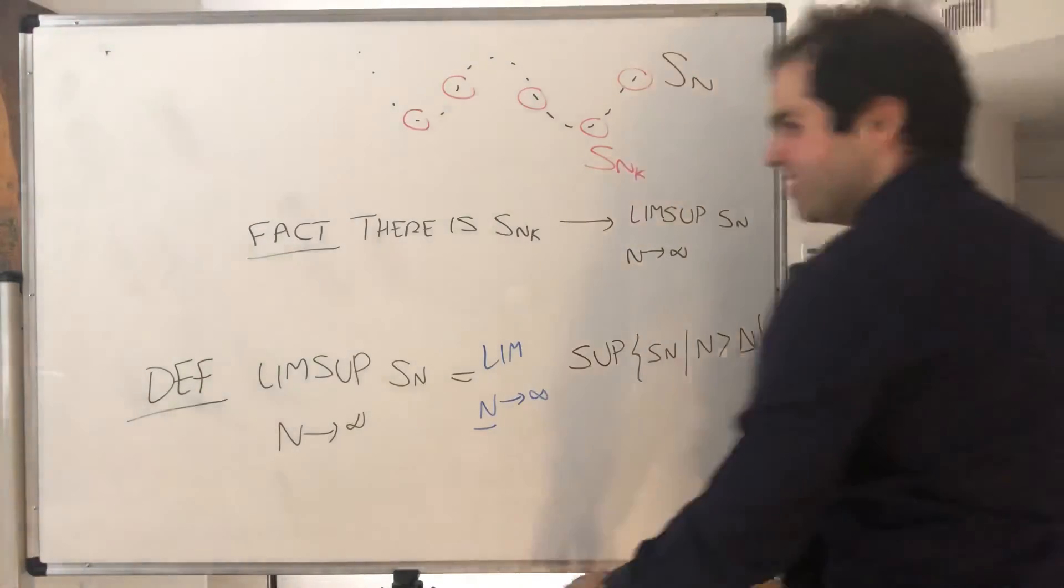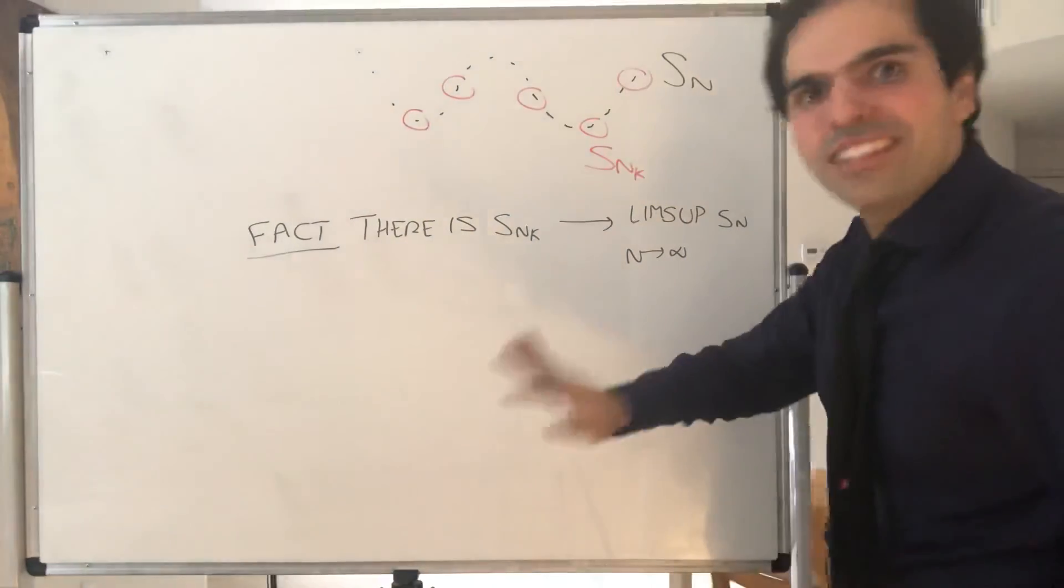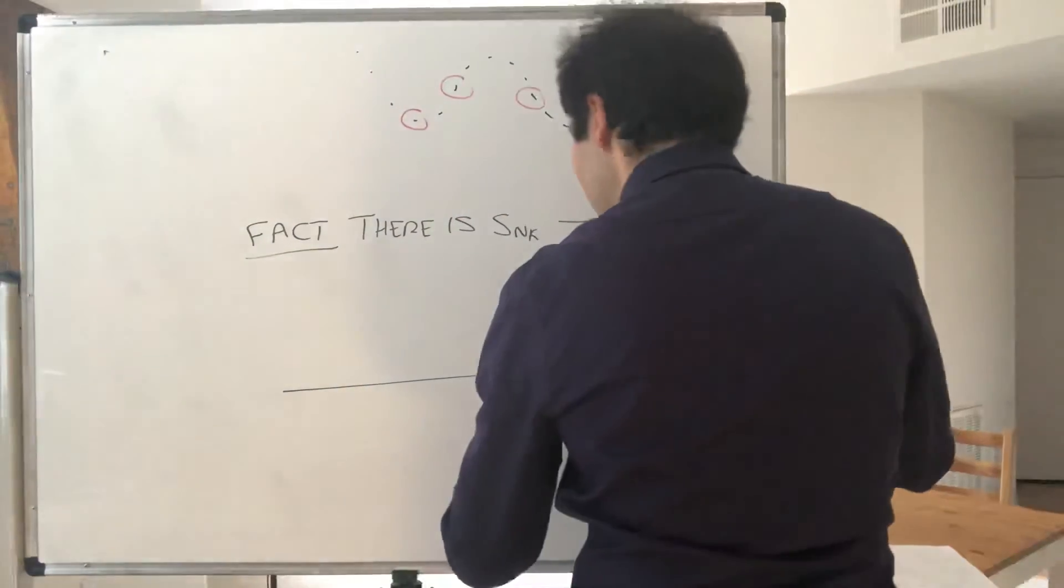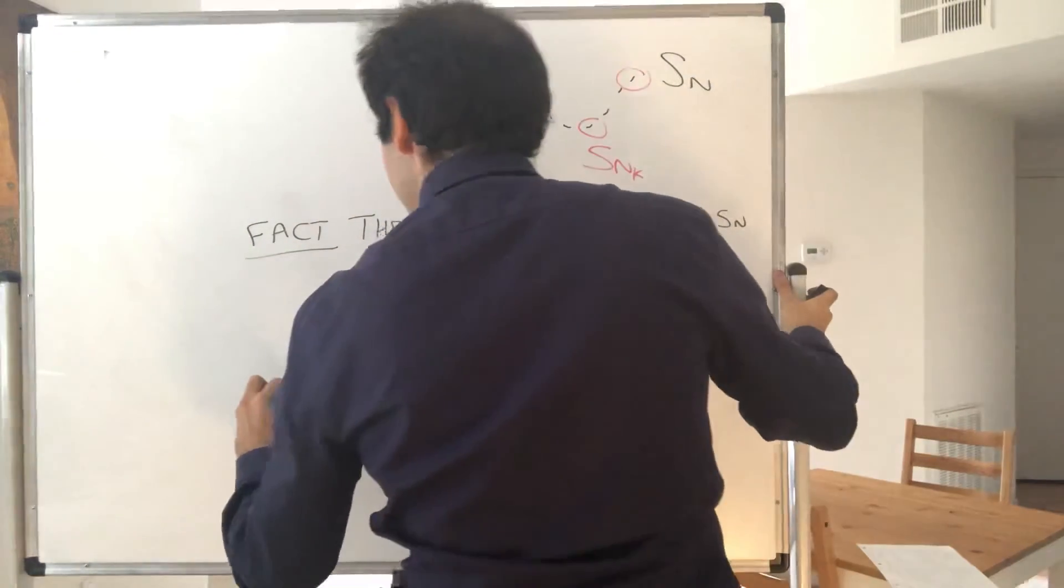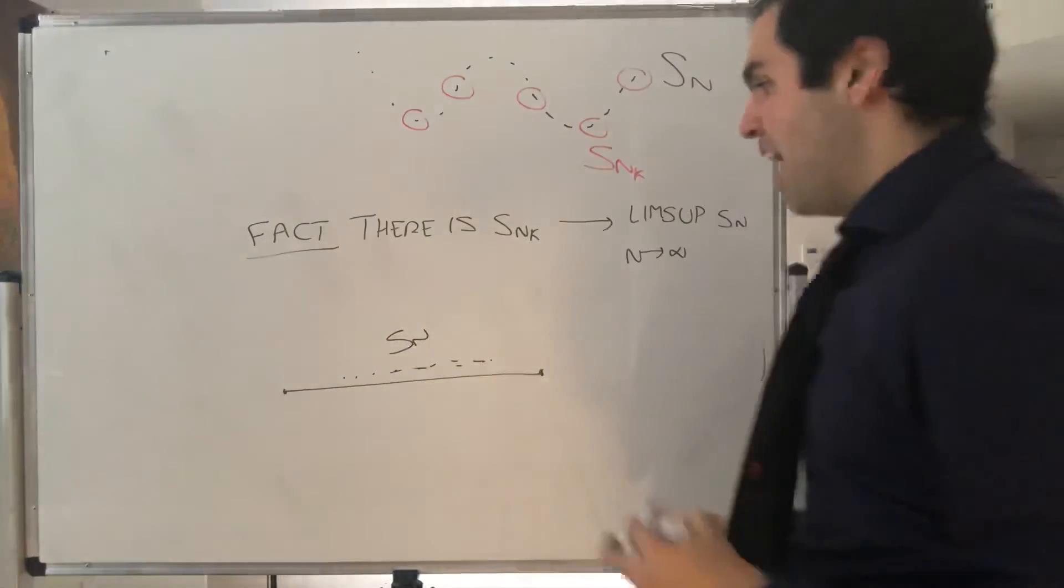And last but not least, why are subsequences so great? Because there's this beautiful theorem called the Bolzano-Weierstrass theorem. And it simply says as follows: suppose you have a sequence that's trapped, in other words it's bounded.